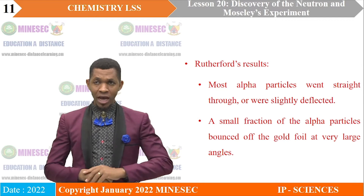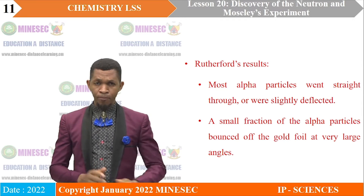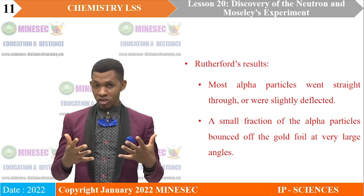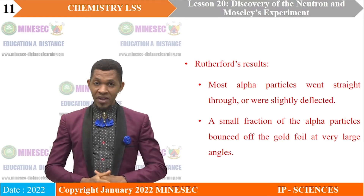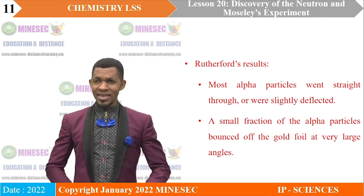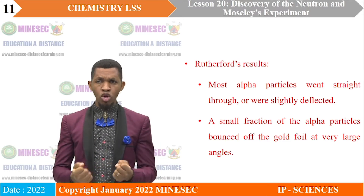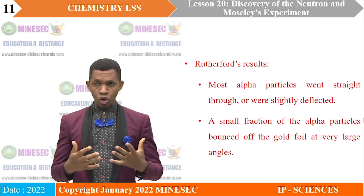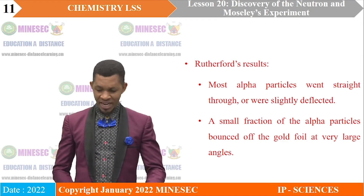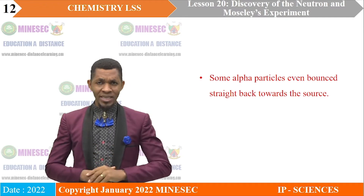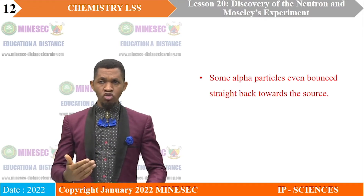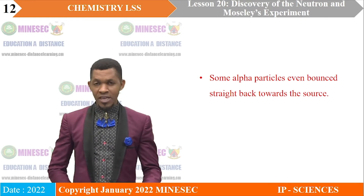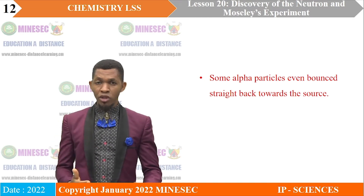Rutherford carried out the experiment and obtained the following results. He discovered that most of the alpha particles went straight through or were slightly deflected — this observation could be explained by the plum pudding model. What was surprising is that a small fraction of the alpha particles bounced off the gold foil at very large angles. Even more surprisingly, some alpha particles bounced straight backwards. These two observations were a surprise because the plum pudding model could not explain them.